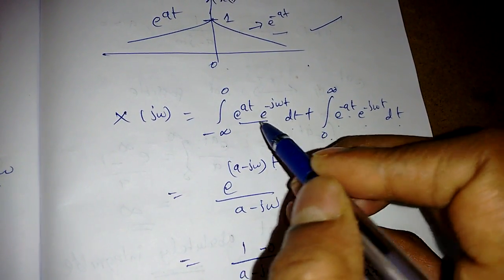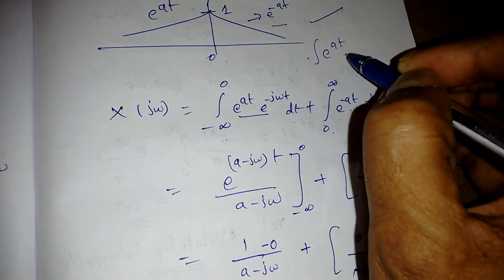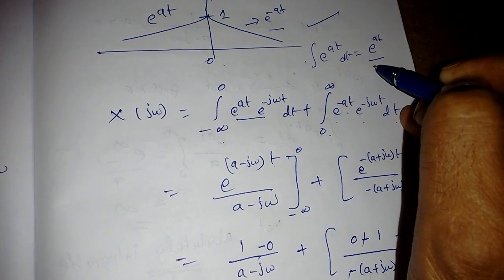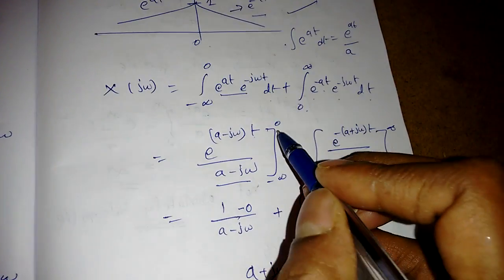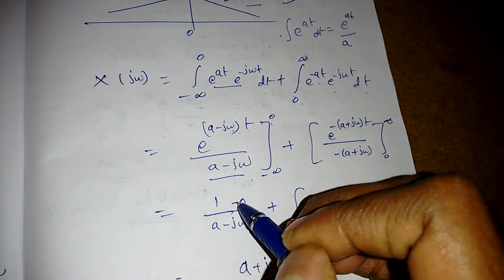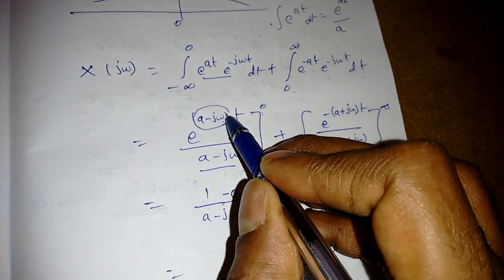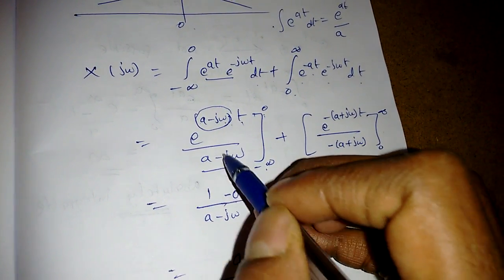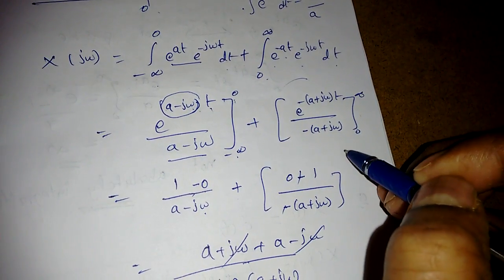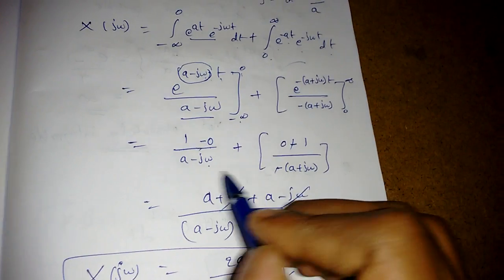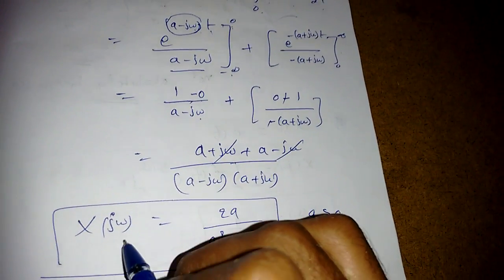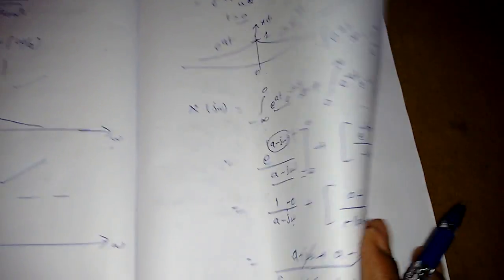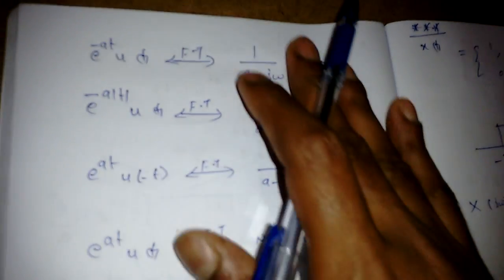Integrating e^((a−jω)t), we recall that integrating e^(x) gives e^(x) divided by the derivative of x in the denominator. Substituting limits — at t = −∞, e^(−∞) = 0 — gives 1/(a − jω) for the first part, and we already know the second part gives 1/(a + jω). Taking the LCM, X(jω) = 2a/(a² + ω²) for e^(−a|t|).